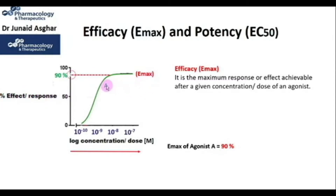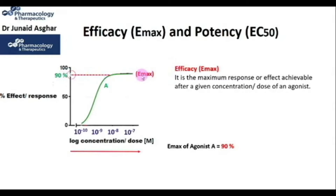For agonist A, the Emax is 90 percent. So agonist A is capable of producing a 90 percent maximum effect, and the Emax or efficacy of this agonist would be 90 percent.